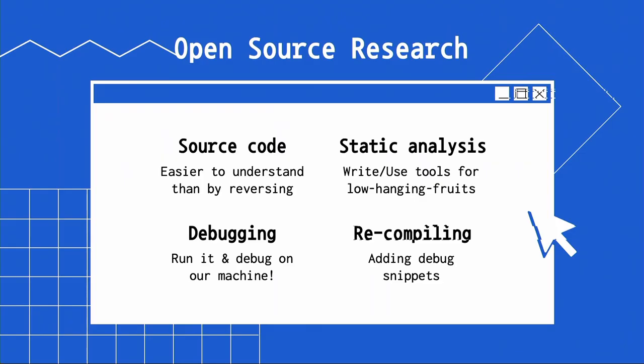Some methodologies. When you're researching open-source, the most straightforward thing you can do is just start reviewing and searching for vulnerabilities, because unlike closed-source research, you have the source code yourself — so you don't need to actually do reverse engineering. But maybe I will talk about this more later.